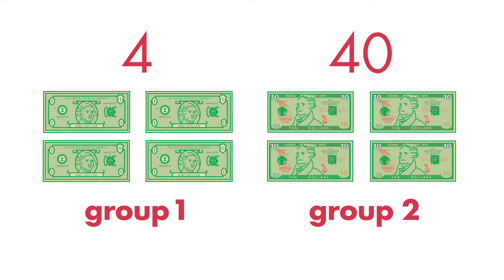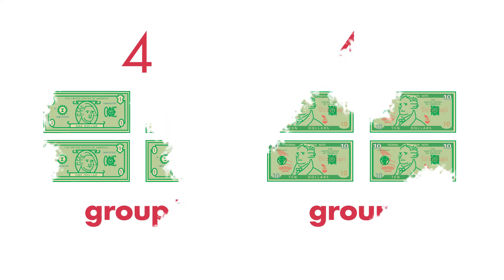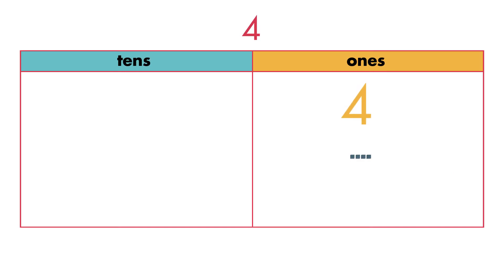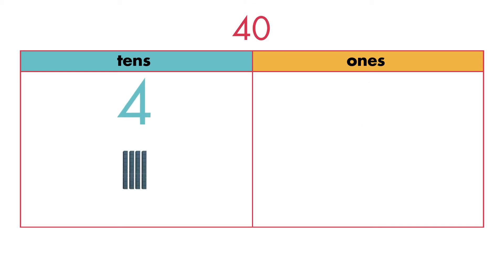The same digit can have different values. The number 4 has the digit 4 in the ones place. The number 40 has the digit 4 in the tens place and the digit 0 in the ones place. Four groups of 10 are equal to 40.